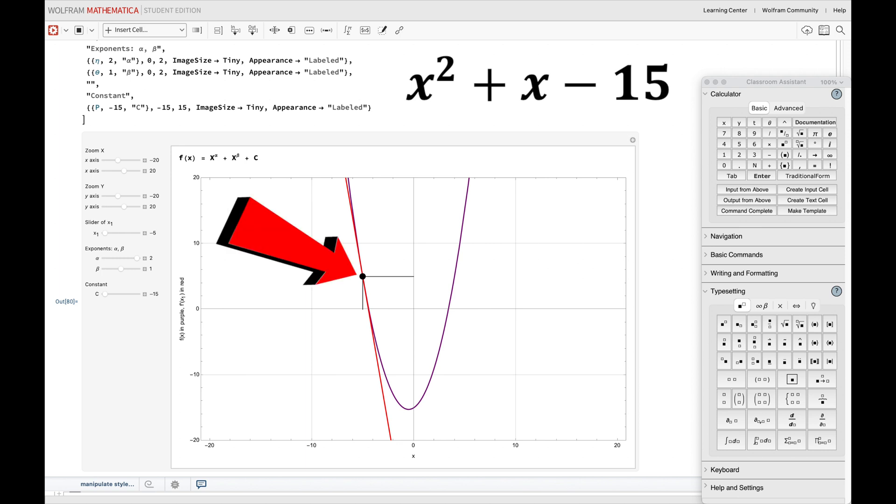And what's a tangent line? Well, it's just a straight line that touches the curve at a single point and does not cross it, i.e., as I said, the red line.